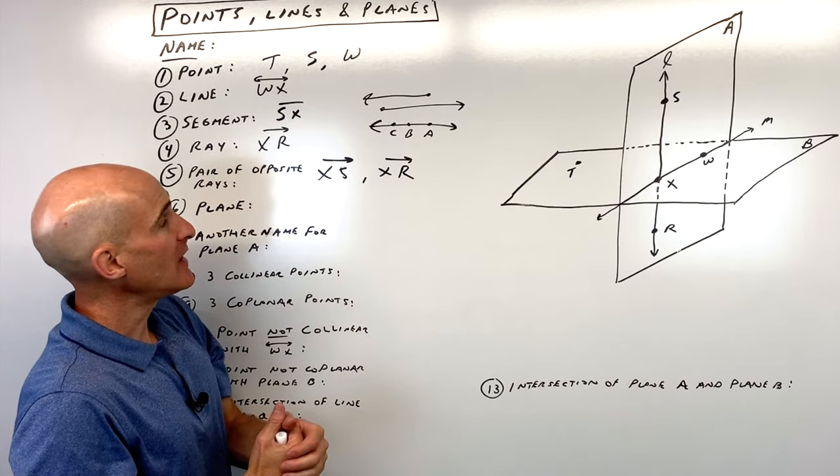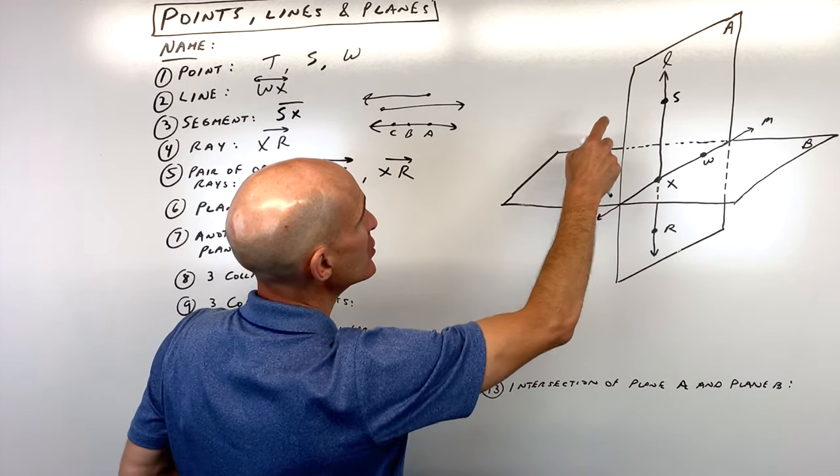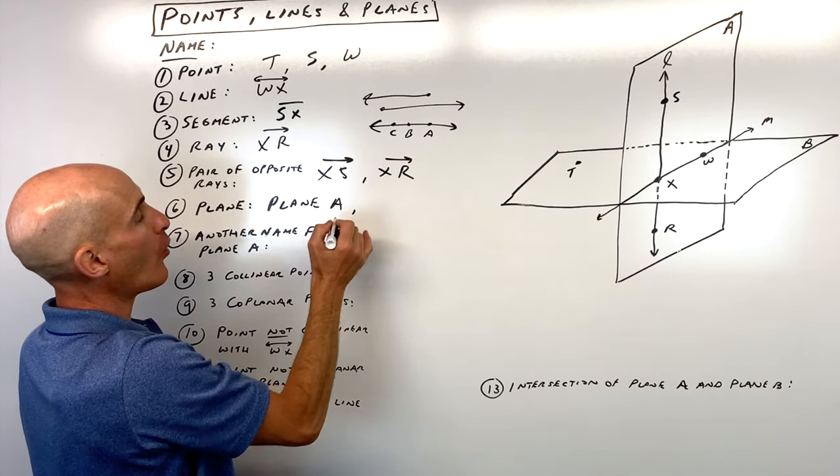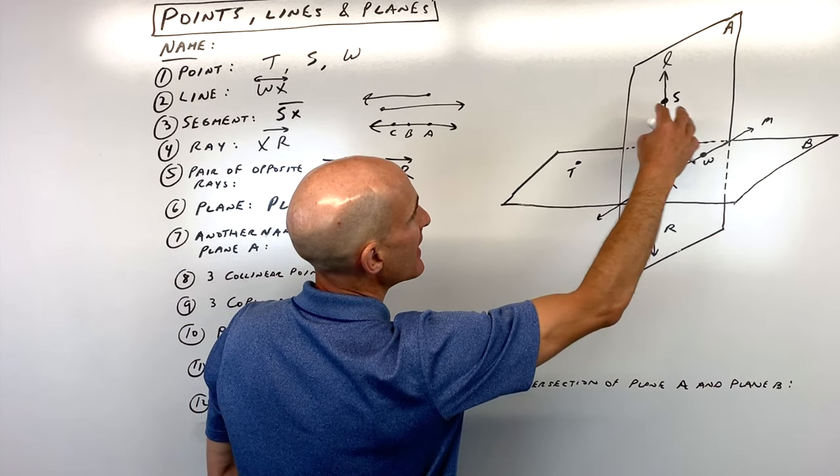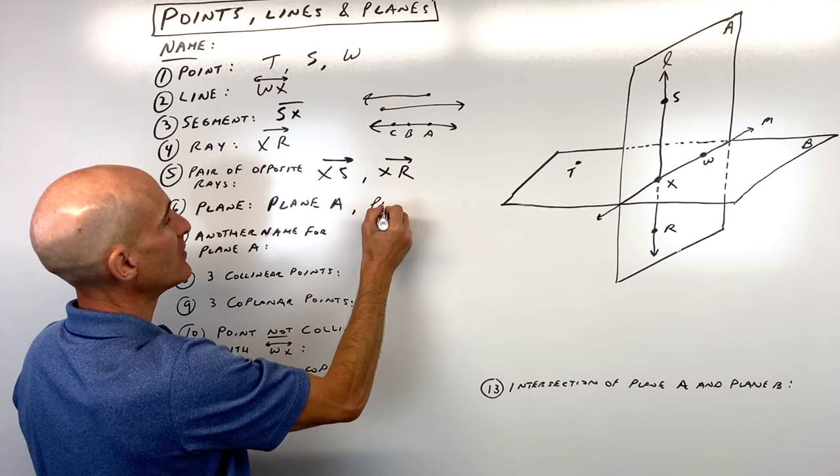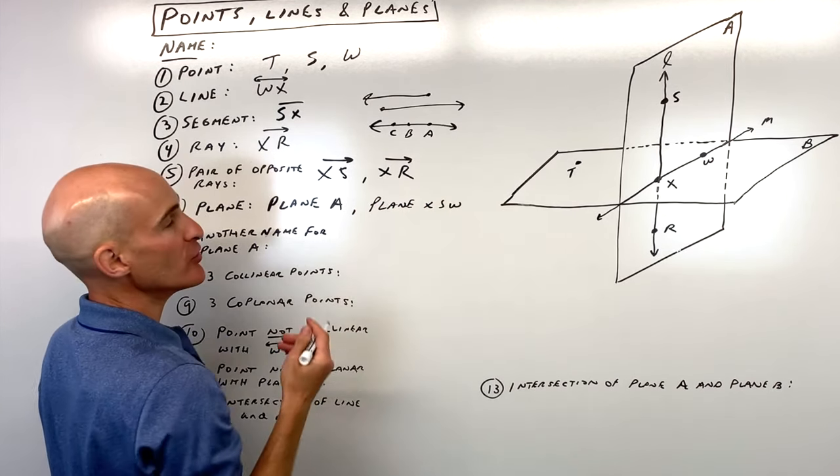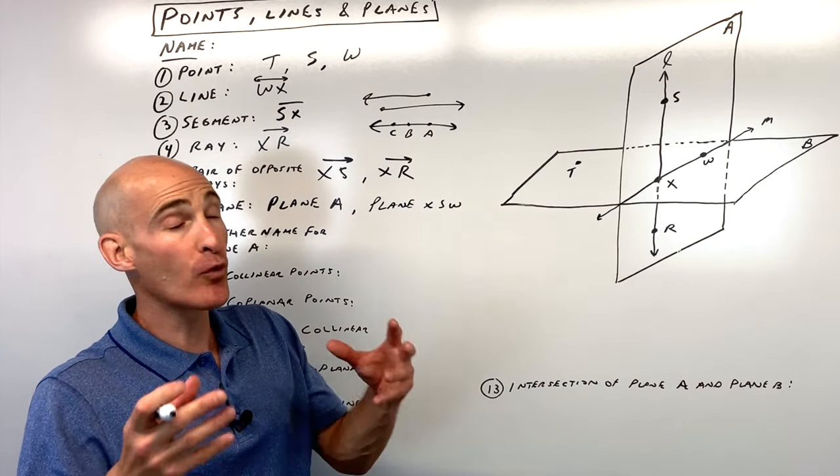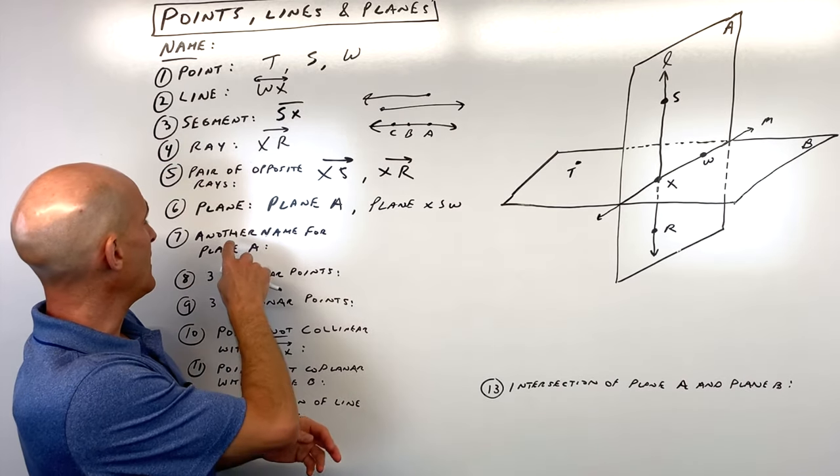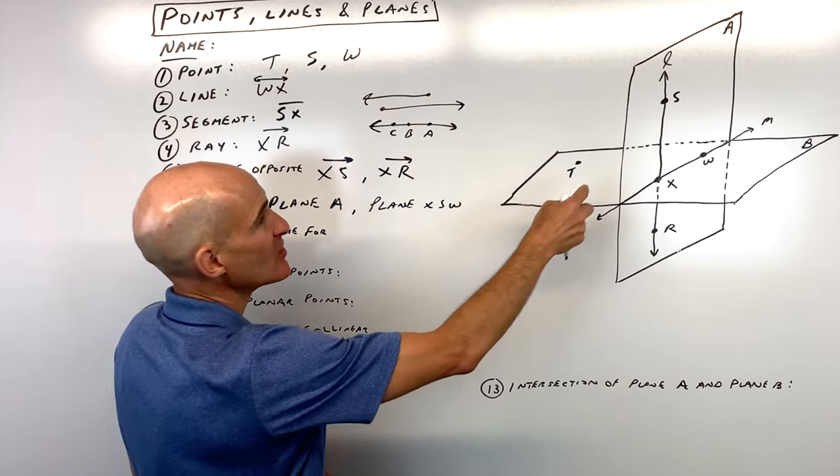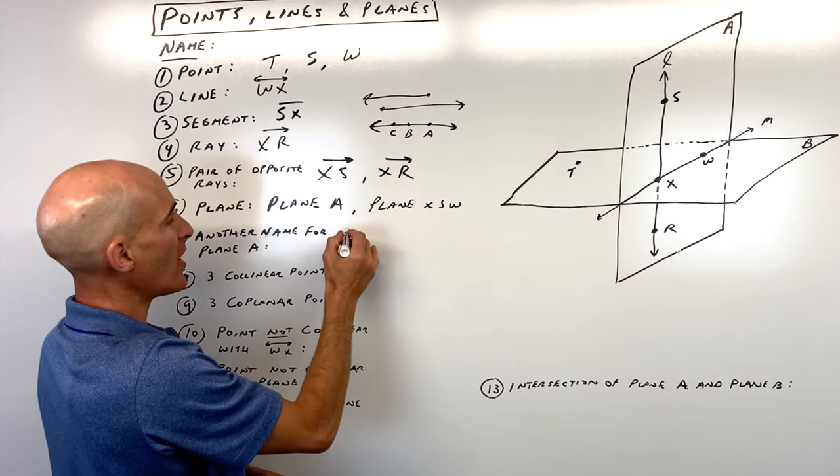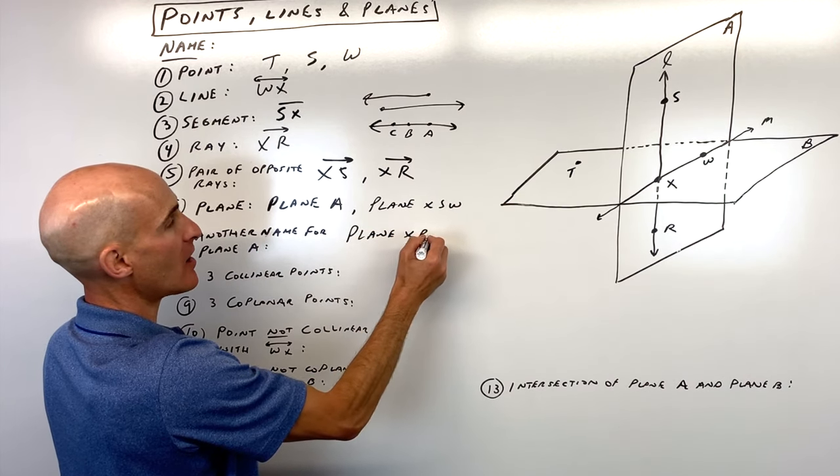For number six, name a plane. Remember a plane's a flat surface. We could say plane A. That would be one option. So plane A. Or you could pick three points that are not in the same flat surface. So we could say like XSW. So I could say plane XSW. You just use three points. You don't want to do four, five, six. Just pick three points that are not in a straight line. That defines a plane. And then another name for plane A. Well, that's kind of funny. We just did that one. XSW. But we could do, let's say, XRW. That's this flat surface as well. So that's another option, plane XRW.